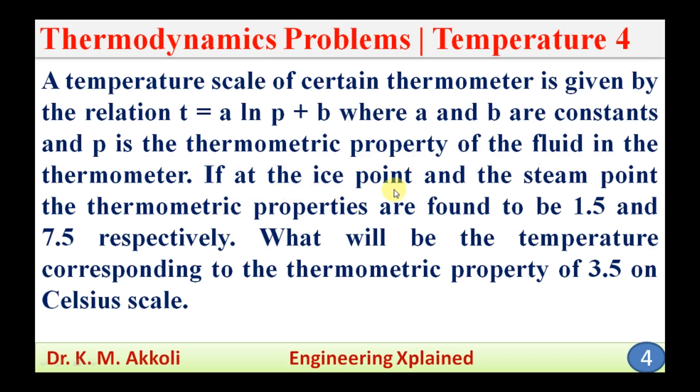If at the ice point and the steam point, the thermometric properties are found to be 1.5 and 7.5 respectively, what will be the temperature corresponding to the thermometric property of 3.5 on Celsius scale?